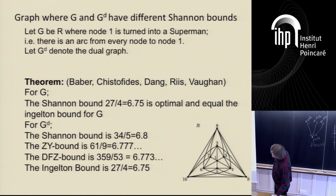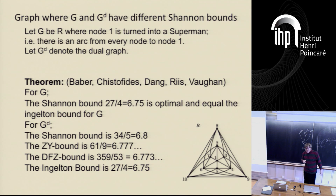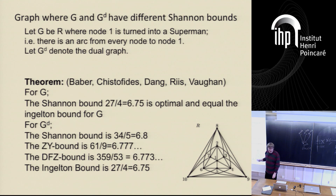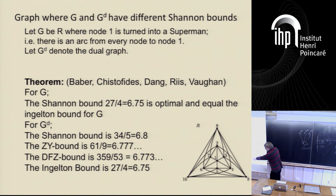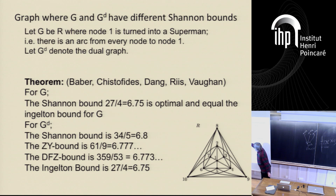Another very interesting question: if you have a directed graph and reverse all the edge directions, can that change the guessing number or the entropy? This is still unknown. What we do know is that if you use the Shannon bound, it can change. For one specific network, flipping one directed edge — giving one node in the middle extra information — changes the Shannon bound from one value to approximately 6.8.